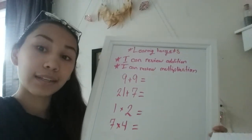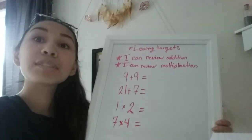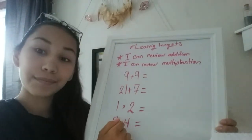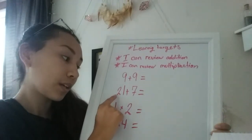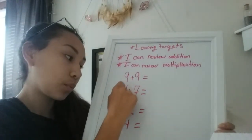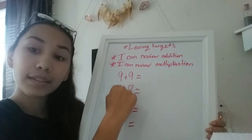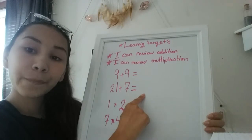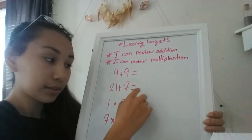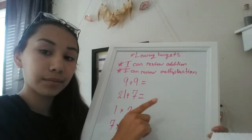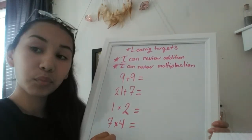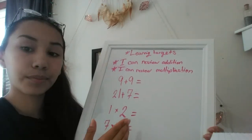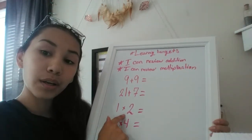Okay so the first one: nine plus nine — can anyone tell me what nine plus nine is? Susie, that's right, 18. Now can anyone tell me what 21 plus seven equals? Correct, 28.